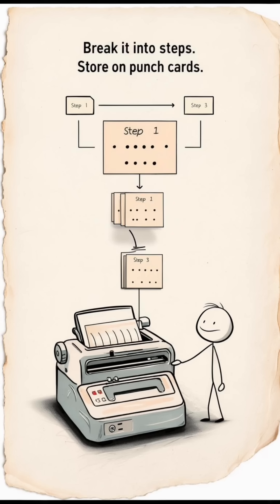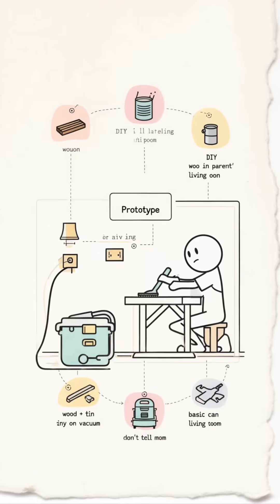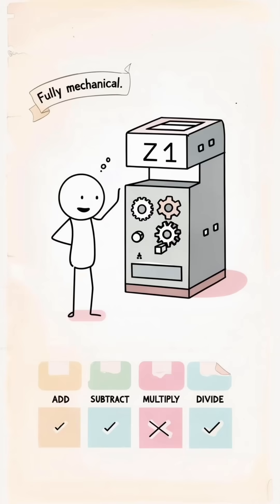He chops big formulas into tiny steps and stores the plan on punch cards. In his parents' living room, he assembled the first prototype from wood, sheet metal, and a household vacuum cleaner. Zeus names it Z1.